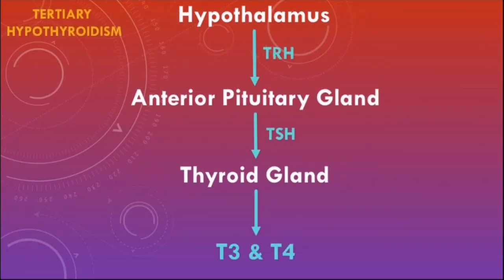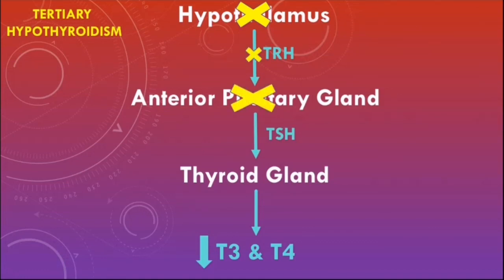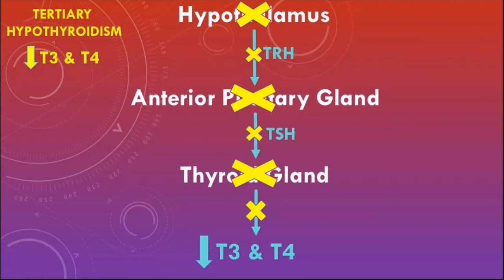Tertiary hypothyroidism refers to hypothalamic lesions. If the hypothalamus doesn't produce TRH, the anterior pituitary will not make TSH, and the thyroid gland will not be stimulated to produce T3 and T4. Tertiary hypothyroidism is characterized by low levels of free T3 and T4, low TSH, and low TRH. It is a very rare cause of hypothyroidism.